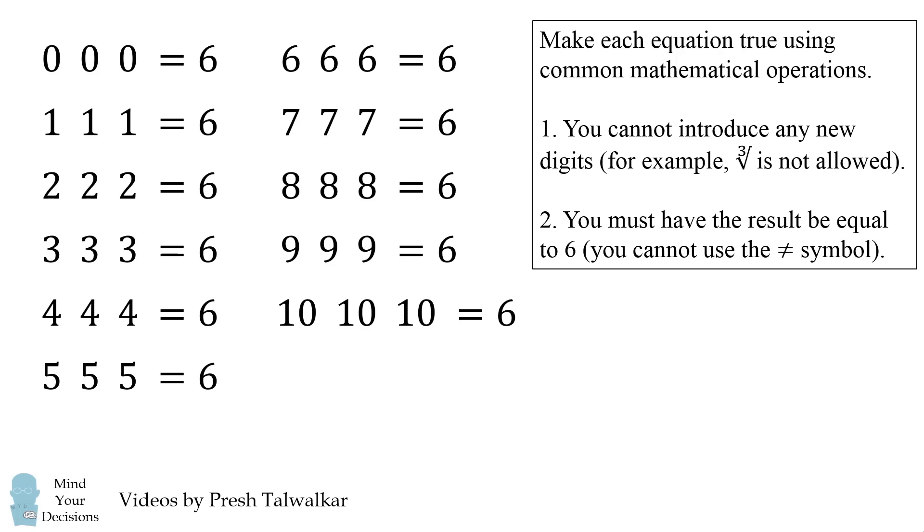There are two rules. First, you cannot introduce any new digits. So, for example, the operation of cube root would not be allowed because it involves the digit 3. The second rule is you must have the result equal to 6. You cannot use the not equal symbol.